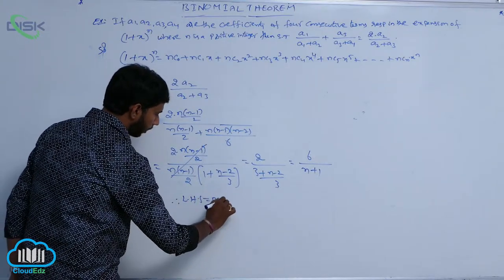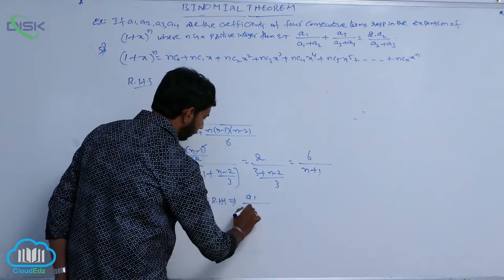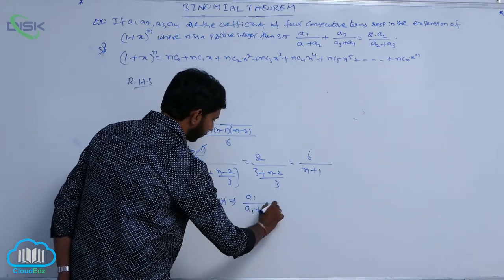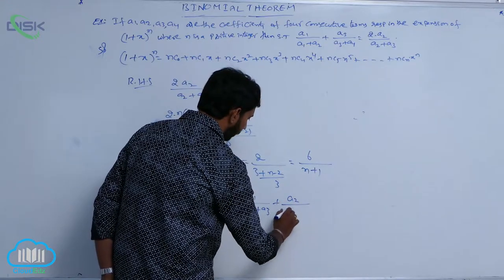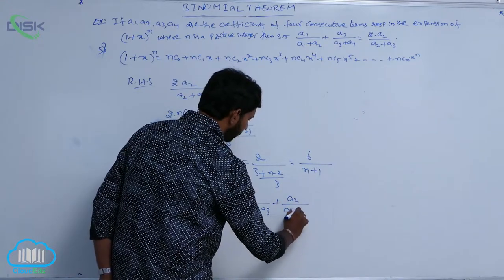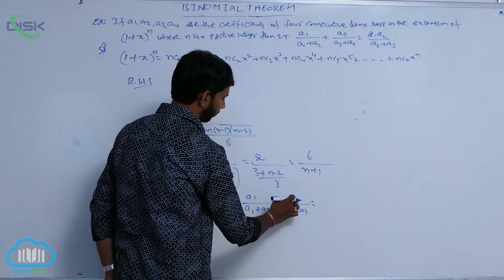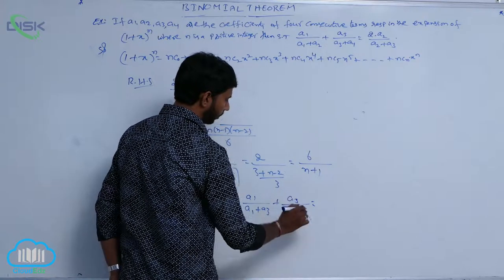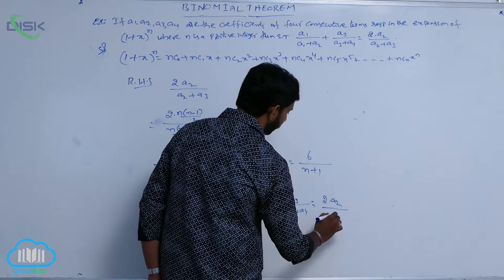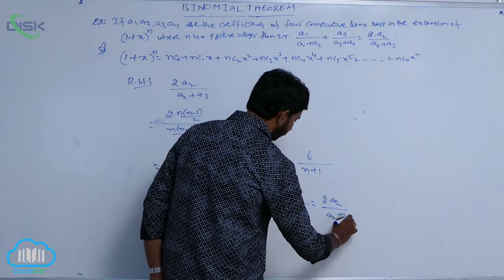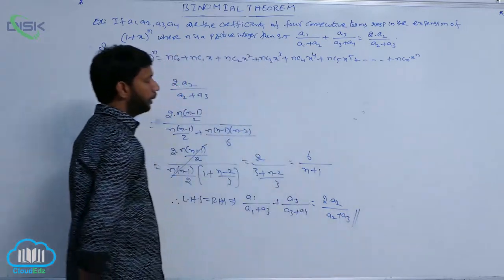LHS is equal to RHS. That implies A1/(A1+A3) plus A2/(A3+A4) is equal to 2A2/(A2+A3). So this is equal to A2 by A2 plus A3.